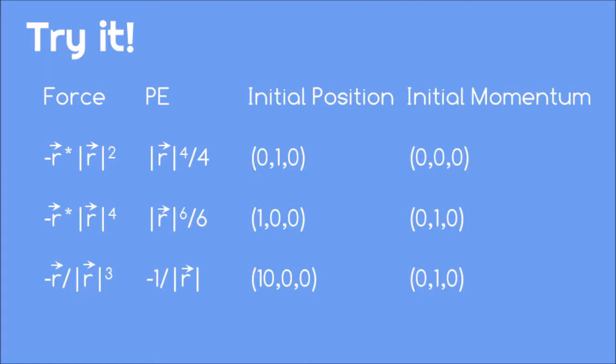You should now be able to evaluate the accuracy of the Euler-Cromer method by checking the total energy. Follow the link in the description below to use this code to apply the Euler-Cromer method for the following forces, potential energies, and initial conditions, and check that the total energy is conserved.